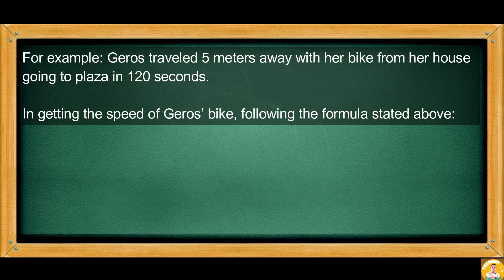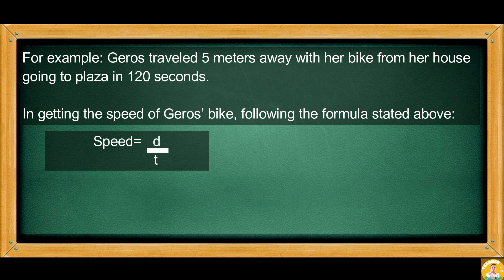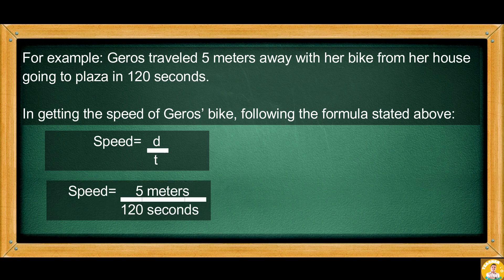For example, Jaros traveled 5 meters away with her bike from her house going to plaza in 120 seconds. In getting the speed of Jaros' bike, following the formula stated above, Speed equals D over T. So speed equals 5 meters, the distance covered, over 120 seconds, the time spent.